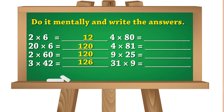Similarly, 4×80 — since 80 is already close to a round number — gives 320. The next problem is 4×81. Looking at the nearest 10-digit number, 80×4 is 320, and then I add 1 more 4, so my answer becomes 324.